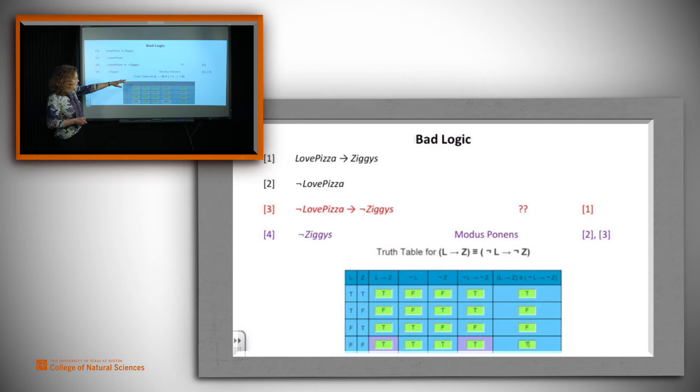Let's look at what the truth table would be if it were a sound rule. It would look like this. We would have to show that L implies Z is logically equivalent to not L implies not C. And look at what we get. Again, we get two Ts and two Fs. Again, that we get an F exactly in the case that the two inputs, in this case, loving pizza and Ziggy's, have different values. So that's where the trouble was.